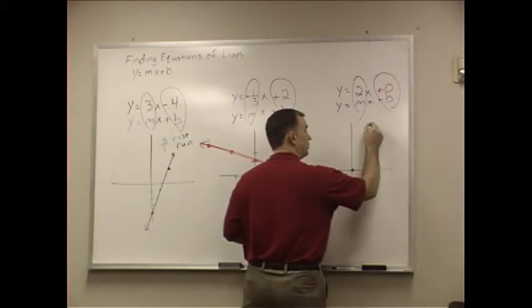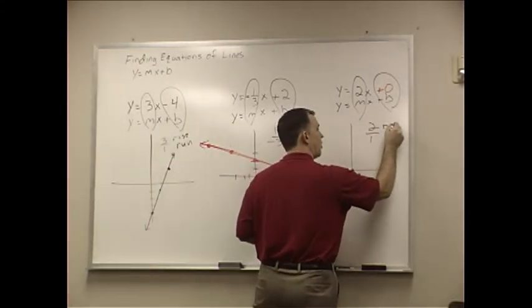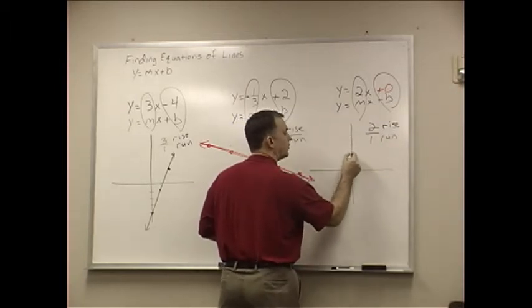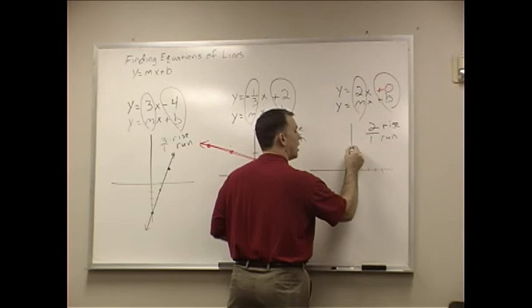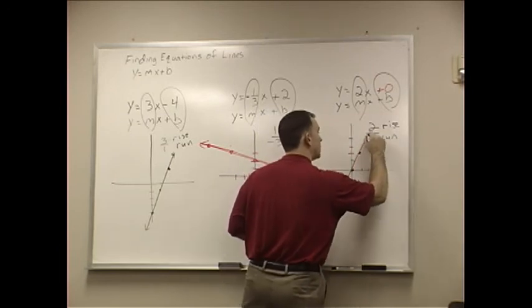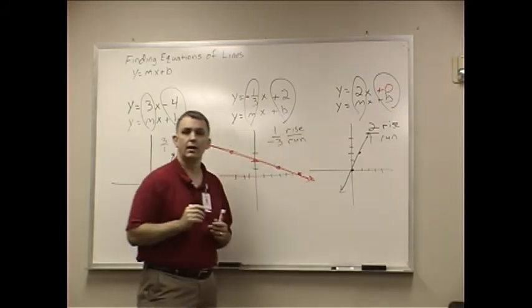The m value is 2. 2 over 1 for my rise and run. So I go up 2 over 1. Up 2 over 1. And then I take it like that.